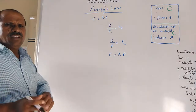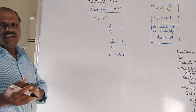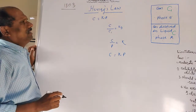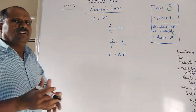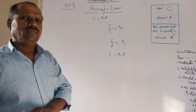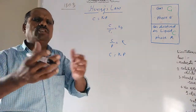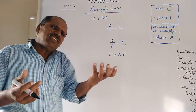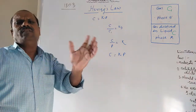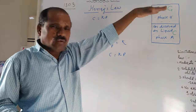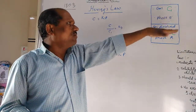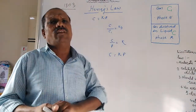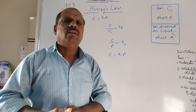Now I am explaining Henry's law. William Henry in 1803 — this law is another form of the distribution law. Whenever solute X distributes itself into two immiscible solvents at constant temperature, the concentration of X in solvent A upon concentration of X in solvent B is equal to Kd. That is the normal distribution law.